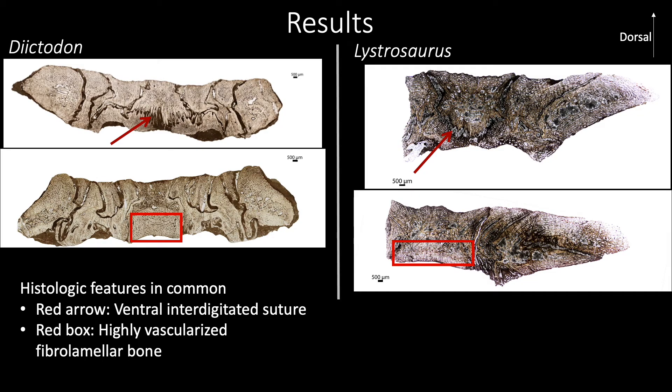Here we have a couple of the thin sections that we made. On the left-hand side of the screen we have the sections for Diactodon, which we believe to be a mature specimen based on the size. On the right we have the sections for Lystrosaurus, which we believe to be a juvenile specimen based on histology. Today I'll be focusing on two features that we found in common between the two specimens.